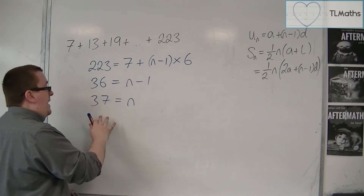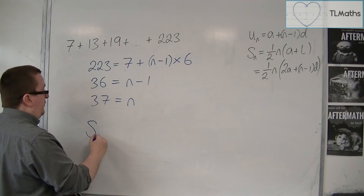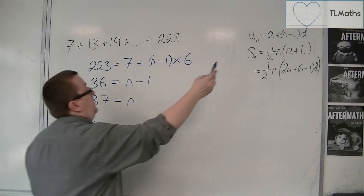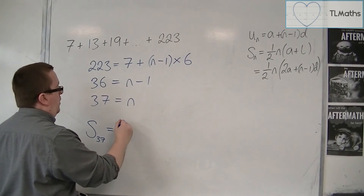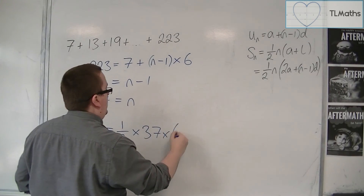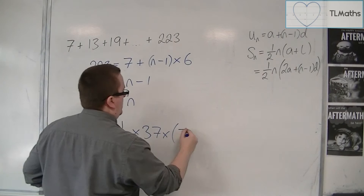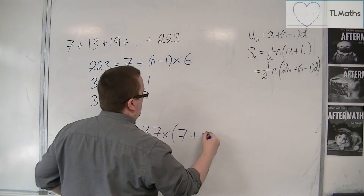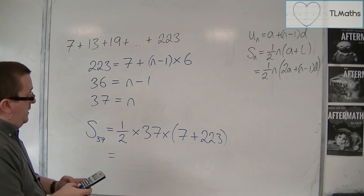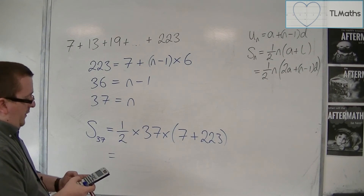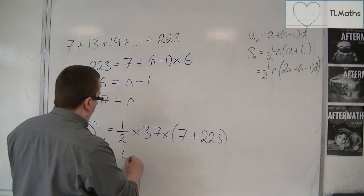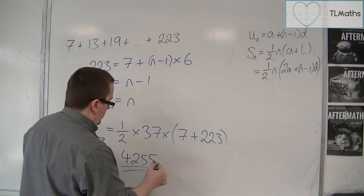Now that I have n, I can say that the sum of the first 37 terms, using this formula, is one half times n times a plus the last term. So one half times 37, times 7 plus 223, and that gets me 4,255.